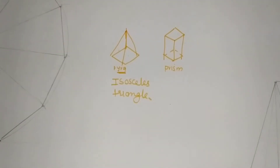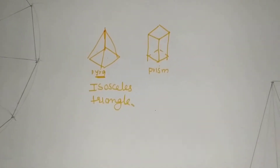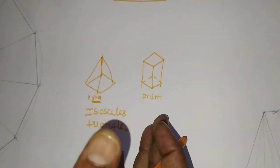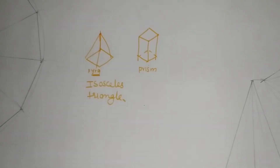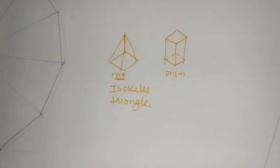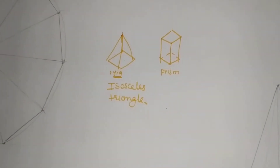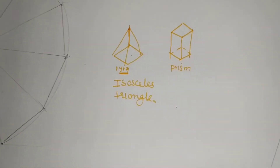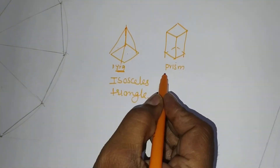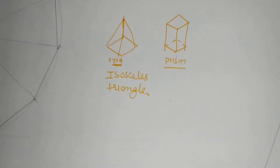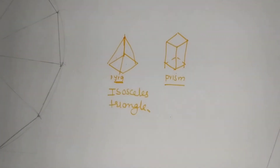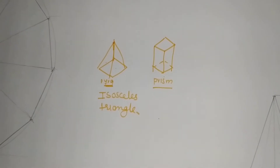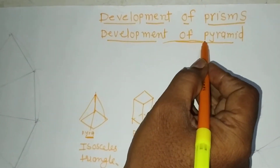What we have studied in the prism and cylinder is that development means we just have to unfold the figure. When we unfold the figure, we obtain the development — that is the required sheet to prepare that prism of that size and length. We also studied the cutting plane acting on it. Today we will see the development of pyramids.